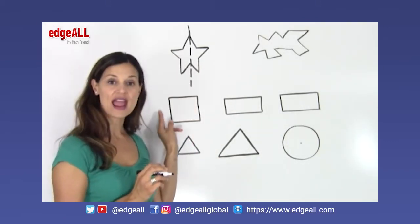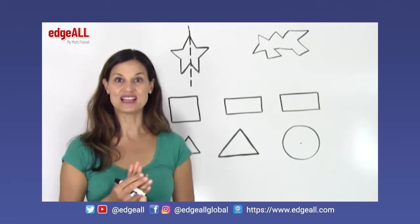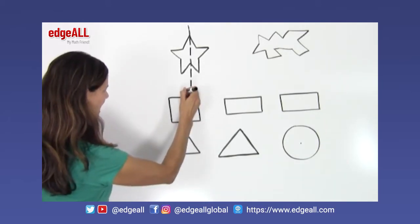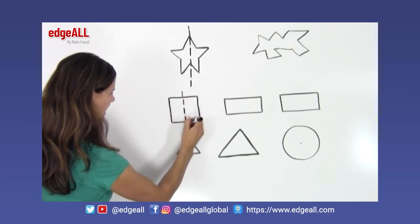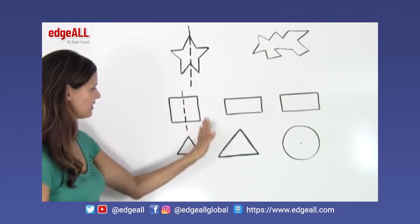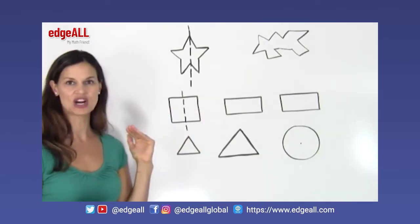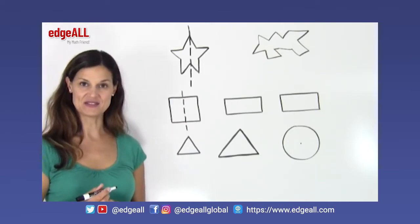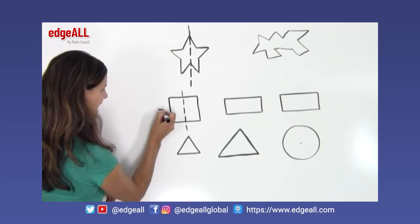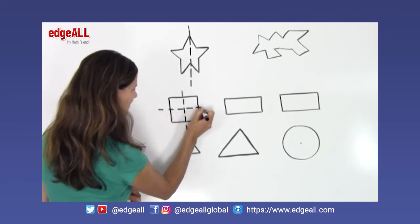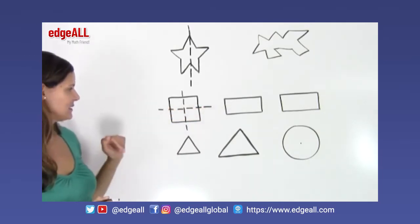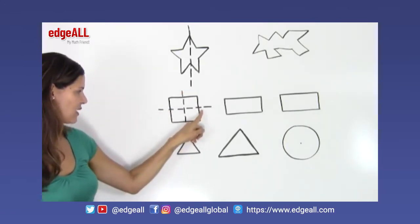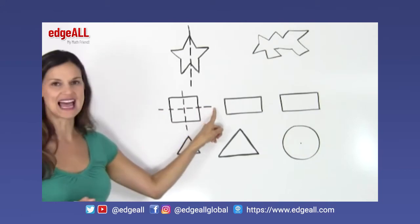A square has several lines of symmetry. First, the square has a vertical line of symmetry. If I draw a line right down the middle vertically, I can see that the shape on this side of the line is a mirror image of the shape on the other side. There's also a line of symmetry that goes right through the middle horizontally, and the shape above it is a reflection of the shape below it.